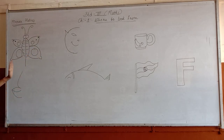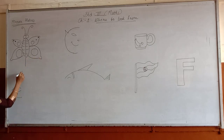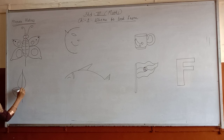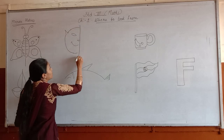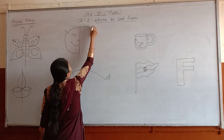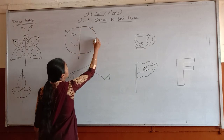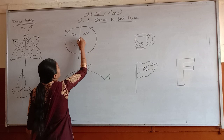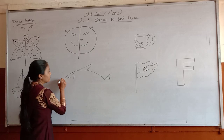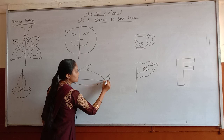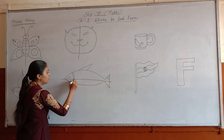If you will put the mirror in the center, you will get the same picture on the next side. This is the diya — you will put the mirror here in the center and you will get the same picture like this. Next is the face of a cat — put the mirror here and you will get the same picture. Here you have to draw eyes, nose, and mouth. Next is the fish — you put the mirror here and you will get the same picture. This is called mirror halves.